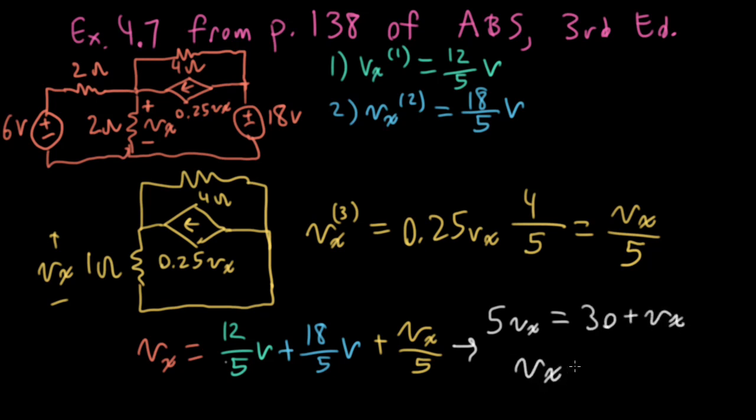I can write VX is equal to 30 over 4 because if I move this VX over I'll wind up with 4 VX. I guess to be technical I should put a V here. So this is equal to 30 over 4 volts or I could write this as 15 over 2 volt. And if you look in the book by Alexander and Sadiq this is the same answer that they get using source transformation techniques. Let's see I guess you could also call this 7.5 volt if you wanted.